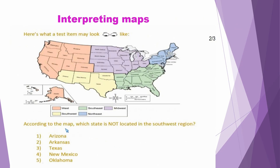Here's what a test item may look like. According to the map, which state is not located in the Southwest region? Here are the five options: one, Arizona; two, Arkansas; three, Texas; four, New Mexico; and five, Oklahoma.